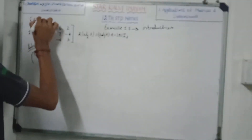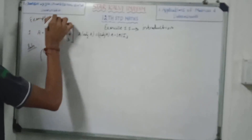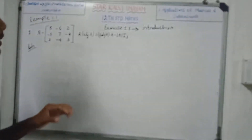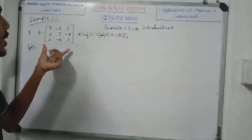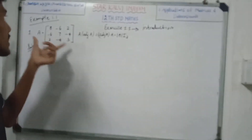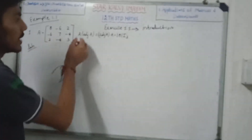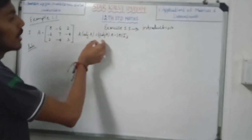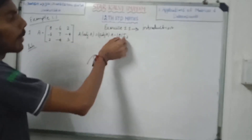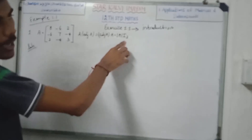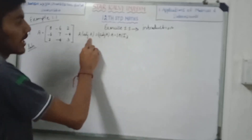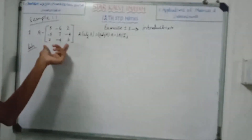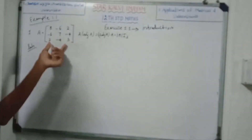Example 1.1. We will talk about an A matrix. We will do an A matrix. In this A matrix: A times Adjoint A, A of Adjoint A, Adjoint A of A. Modulus A times I3 — we will prove it: A times Adjoint A.